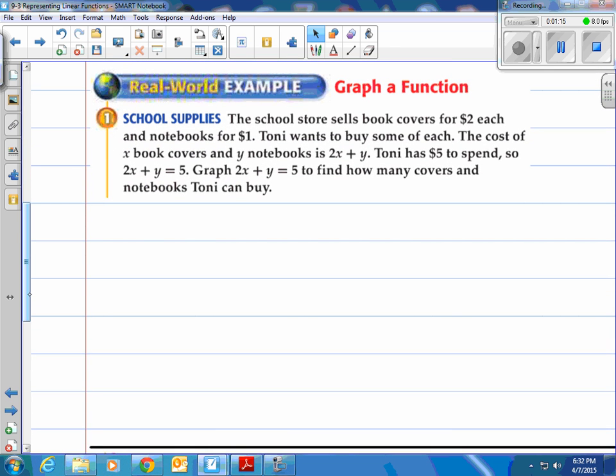So let's look at an example. It says graph a function. School supplies. The school store sells book covers for $2 each and notebooks cost a dollar. Toni wants to buy some of each. The cost of x book covers and y notebooks is well $2 times however many books you get and then y is just $1 so it's 1 times y which is just y. So you have 2x plus y. Toni has $5 to spend so 2 times however many books he gets plus however many notebooks y he gets equals 5.